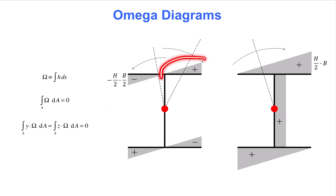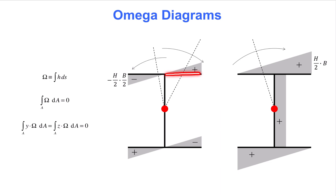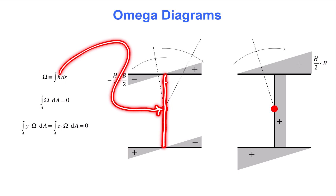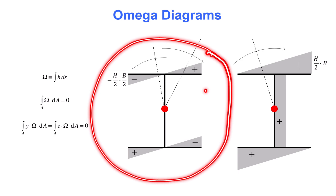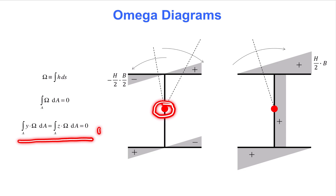Next, we consider the right-hand side part of the top flange. We have anchored the value of the Omega diagram by starting on the left side, so we must start at zero at the top of the web when sweeping the right-hand side part. For the web, the lower case h in the formula is zero because that part goes through the shear center. We can then start sweeping the lower flange, again with clockwise sweep giving positive value. Examining this Omega diagram, it satisfies the first condition: the integral over the entire cross section is zero, as positive parts cancel out the negative parts. All three conditions are satisfied, so we have established the final Omega diagram for a wide flange beam.